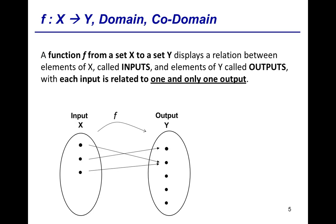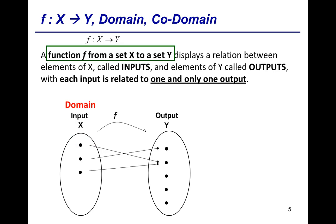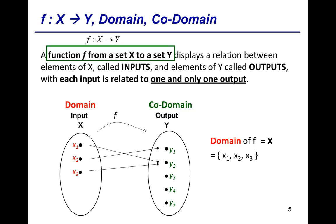Now for some terminologies and notations. Instead of saying a function f from a set X to a set Y, we use the shorthand notation f colon capital X to capital Y. Also, X is called the domain of f. So in this example, the domain of f, which equals capital X, can be listed out as the set of elements x1, x2, and x3.